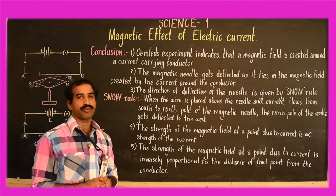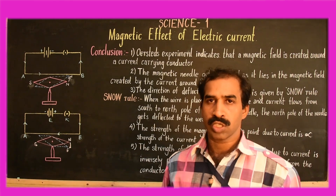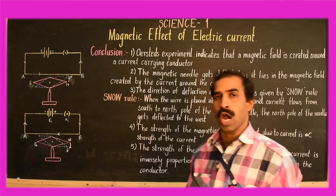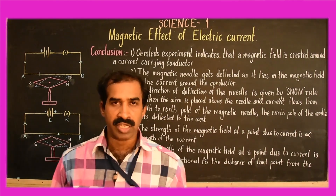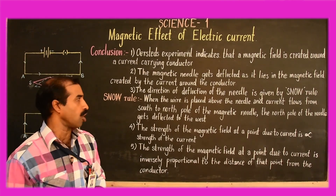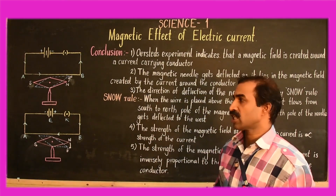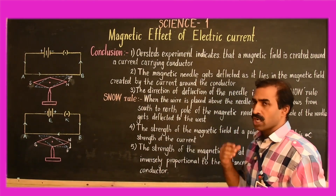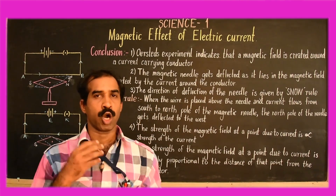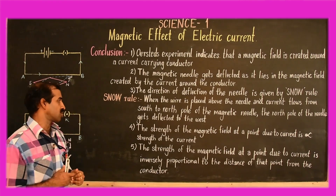The direction of deflection of the needle is given by the SNOW rule. The SNOW rule indicates that when the wire is placed above the magnetic needle and current flows from the south pole to the north pole of the magnet, then the north pole of the needle gets deflected towards the west. If the flow of current is reversed, then the north pole of the magnetic needle gets deflected towards the east.